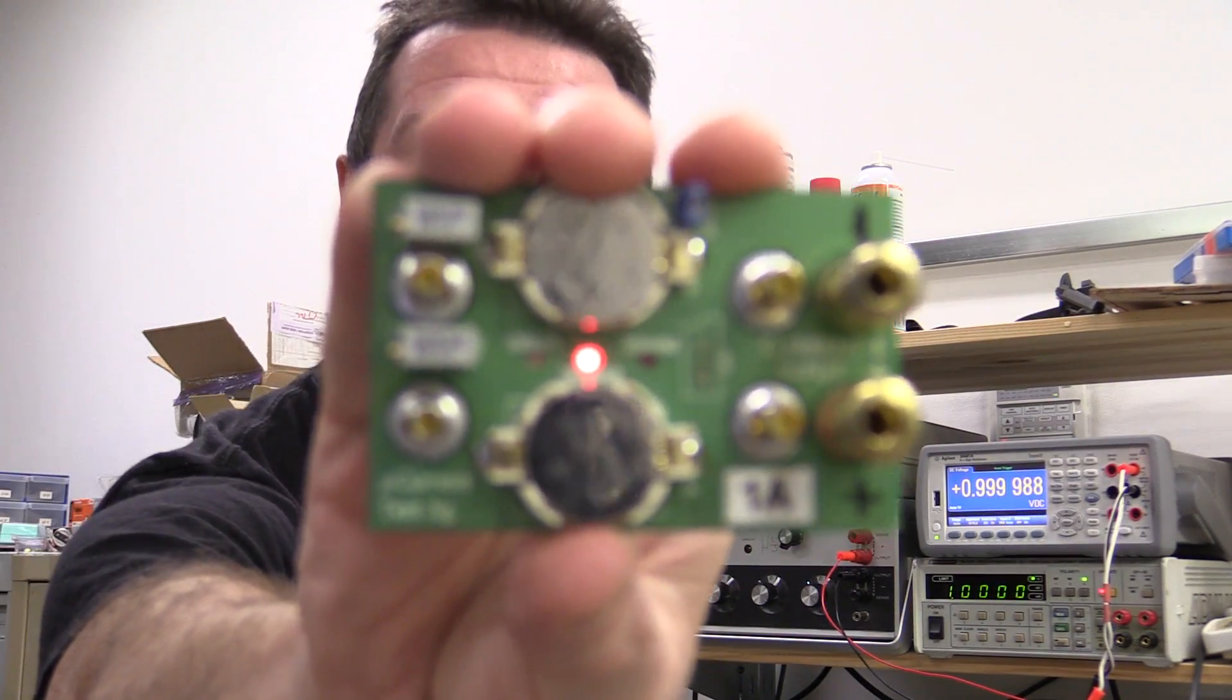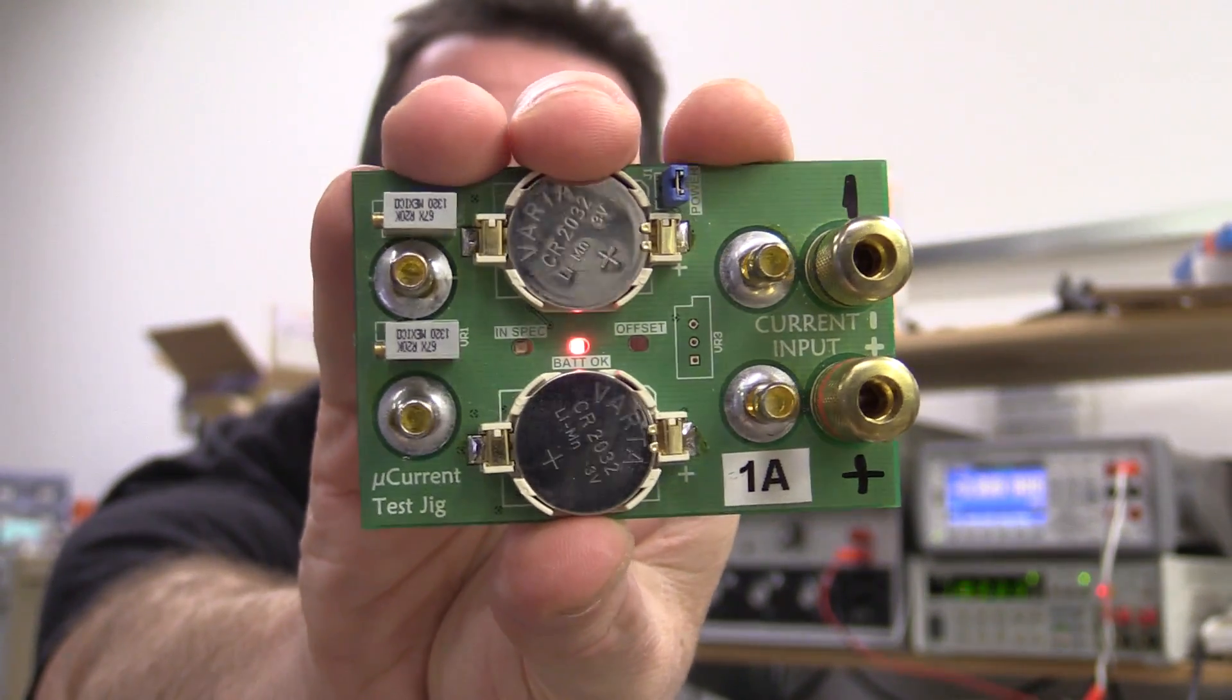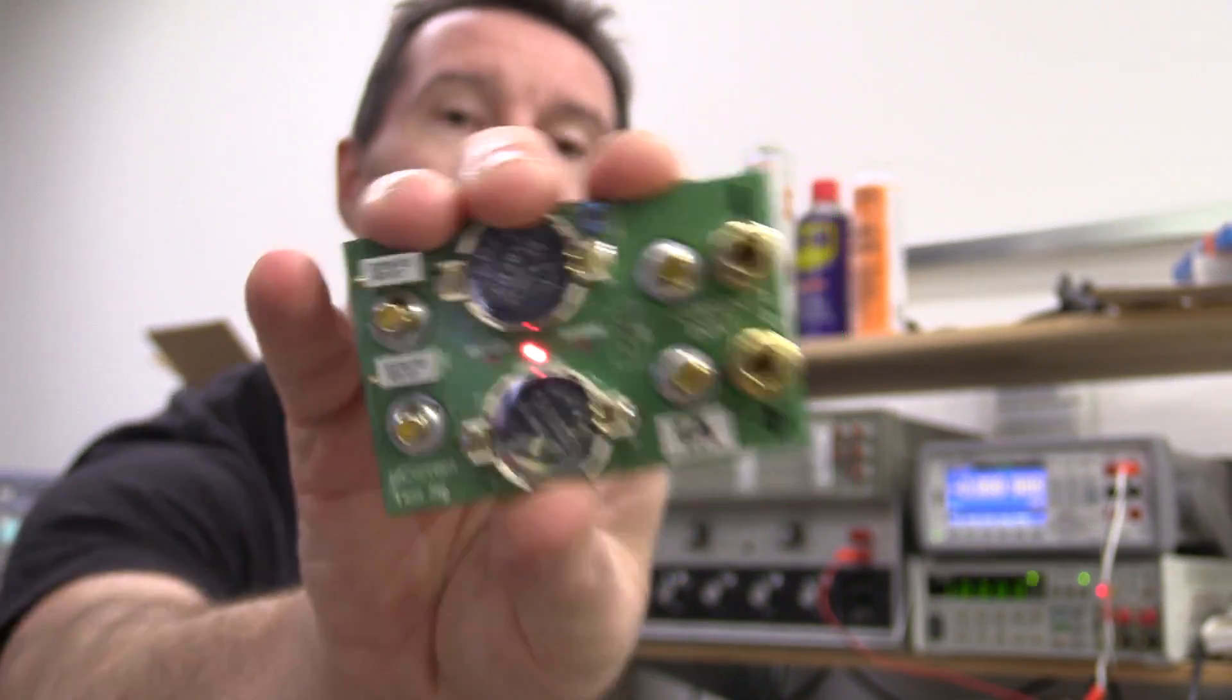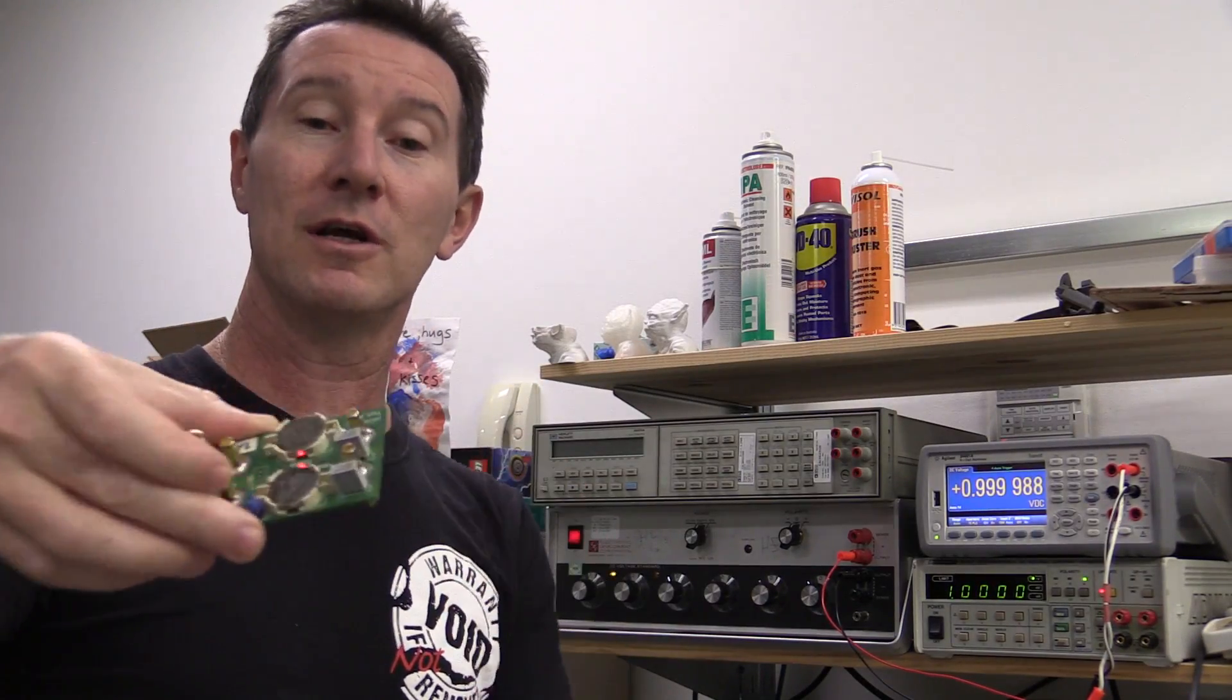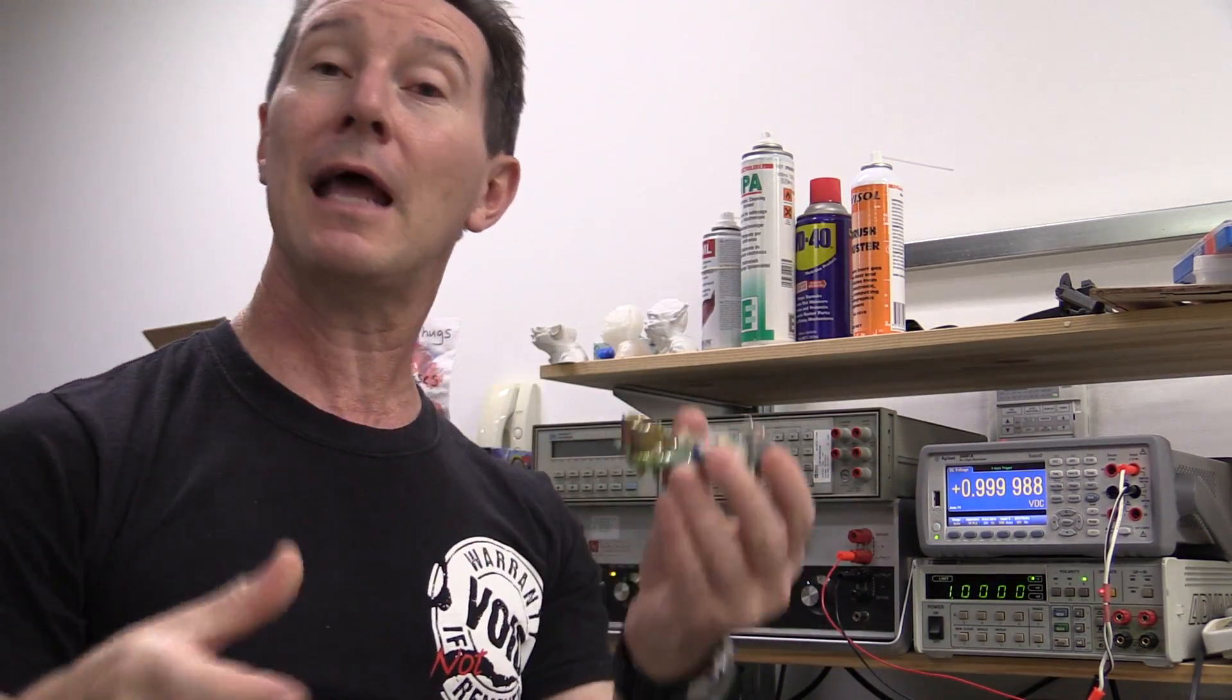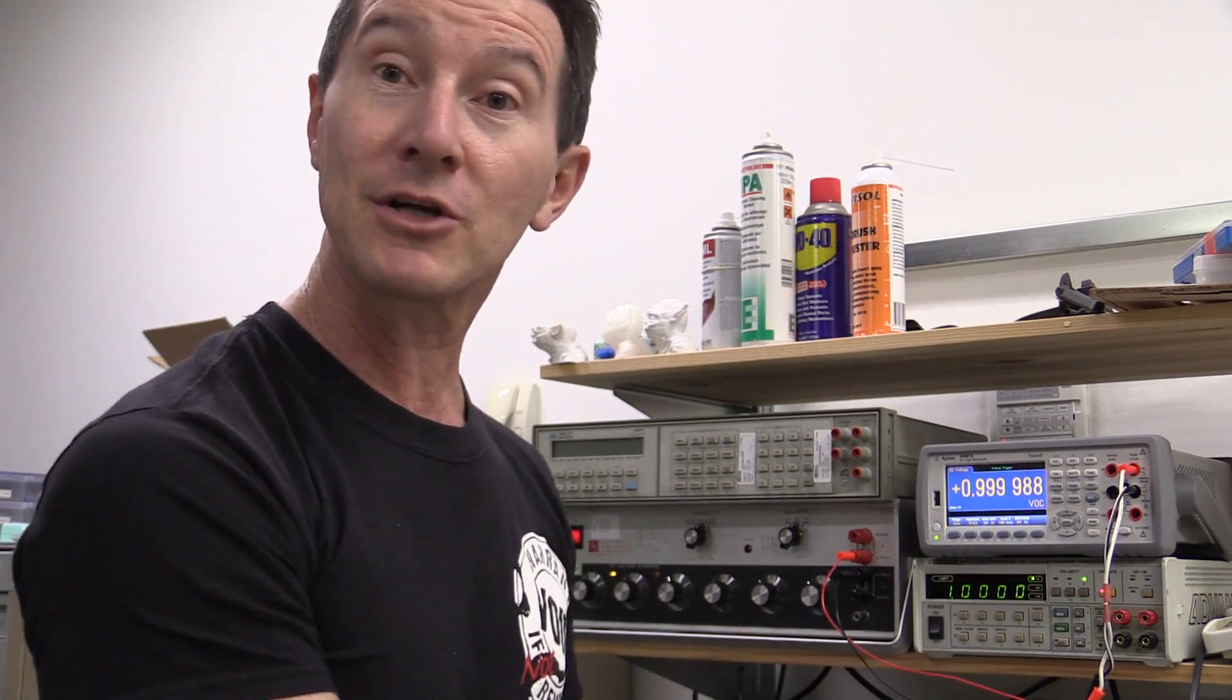I was just checking the calibration of my little microcurrent test jig here. This is the one amp one. I've got several of these for different current ranges and things. And this is the production test jig that goes along and, you know, bang bang bang bang. You put it in and check the microcurrents in production.